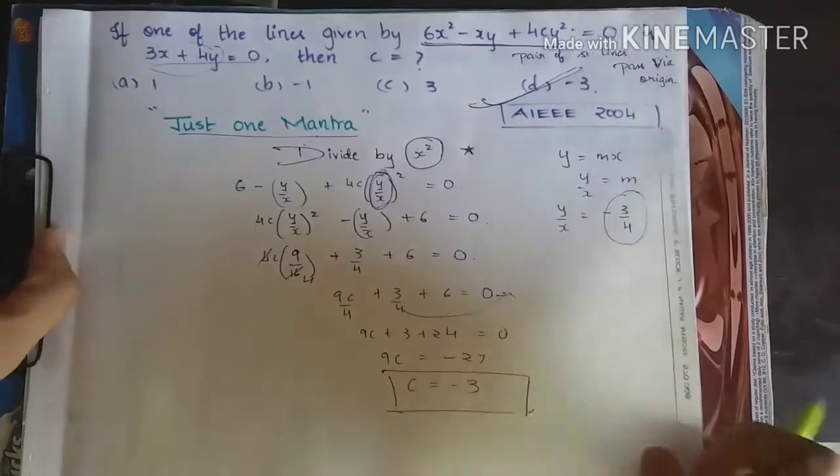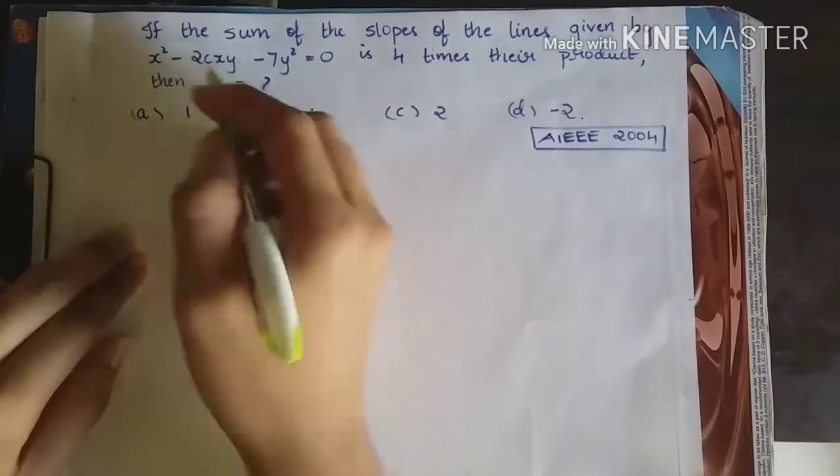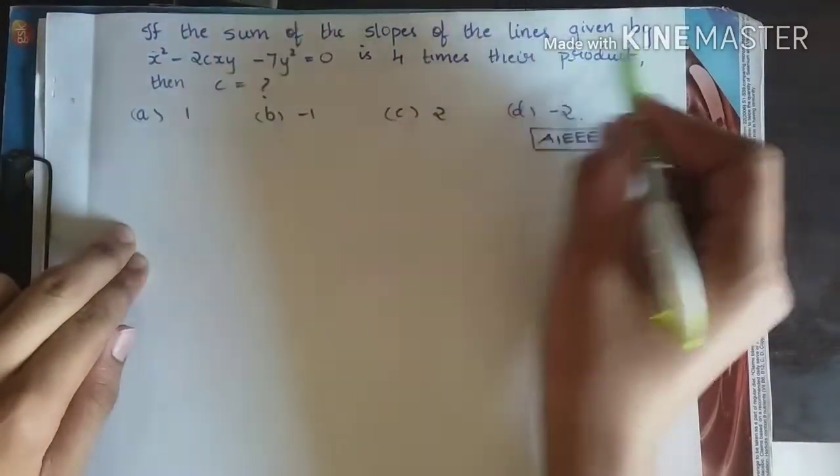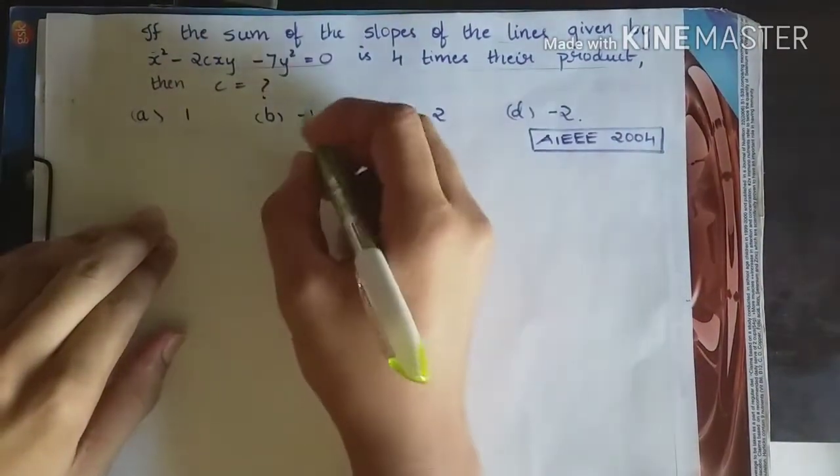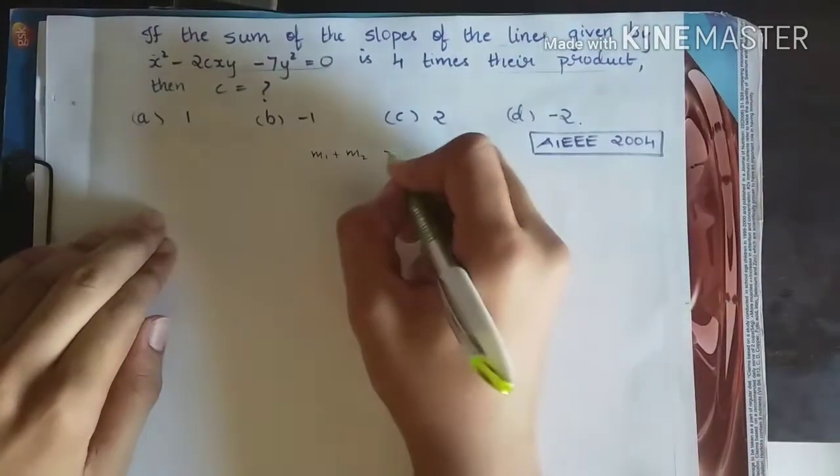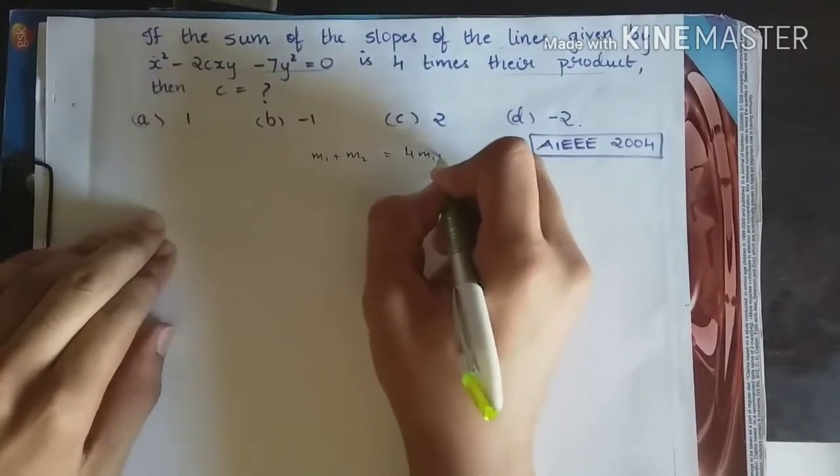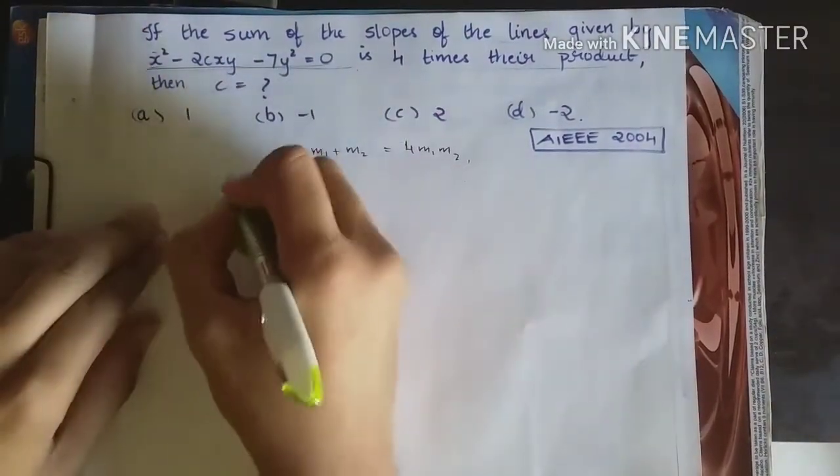So let us get to the next question. This will be similar too. So the question says if the sum of the slopes of the lines given by this is 4 times the product. So what do they say? Sum of the slopes. So sum of slopes will be m1 plus m2 is 4 times the product is equal to 4m1m2. So that is all they say. So first, before we proceed, let us divide by x square.